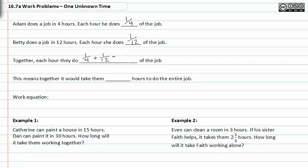This is equal to three twelfths plus one twelfth if we build this up. And that's equivalent to one third of the job. This means together it would take them three hours to do the entire job.